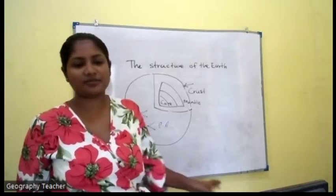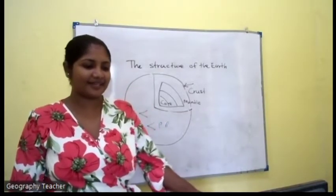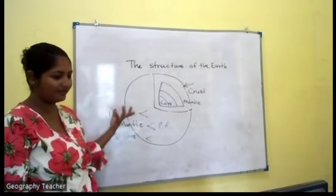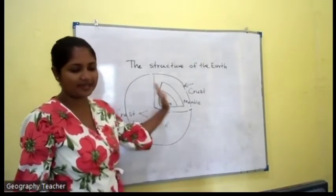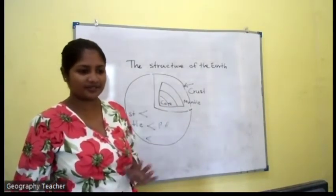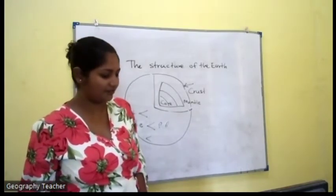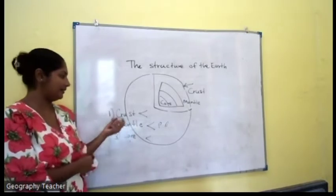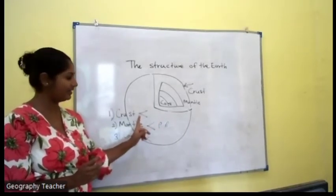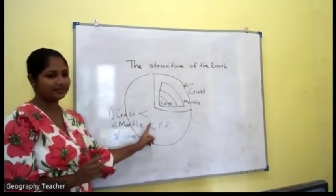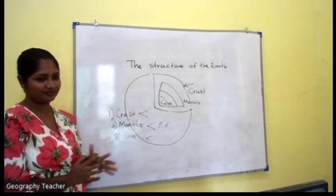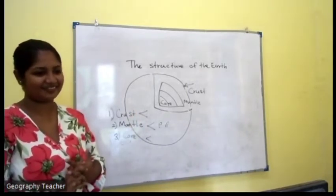Take your textbook and turn to page number 10 and study the sub-layers of these main layers. We can again divide the crust in two ways. Seleni, what are the layers of the crust? Continental and oceanic crust — yes, very good. Continental and oceanic crust.